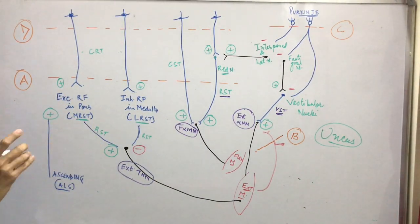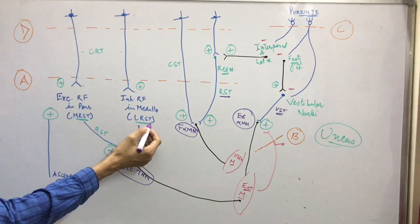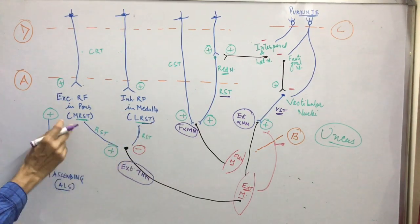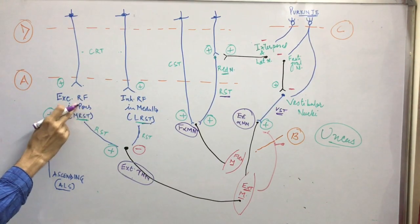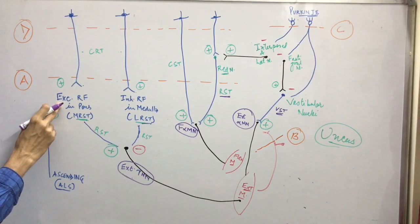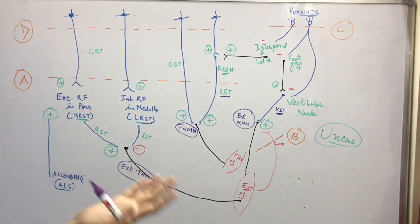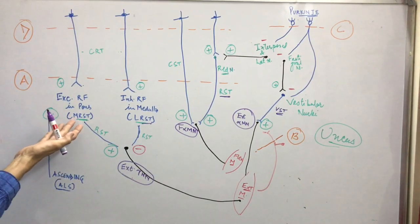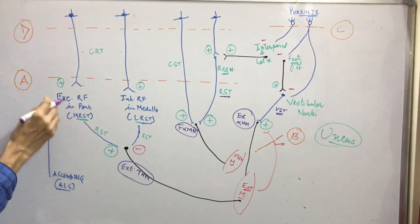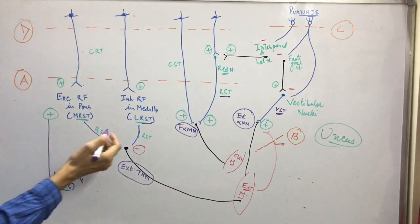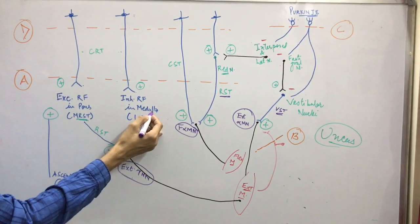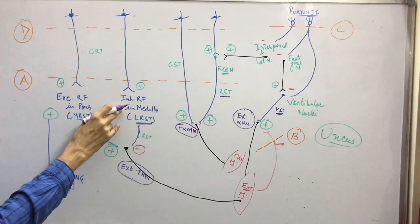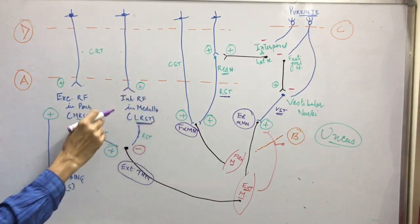In the reticulospinal tract there are two types: one is the medial reticulospinal tract, and the second one is the lateral reticulospinal tract. The medial reticulospinal tract is formed by neurons present in the pons — these are the excitatory reticular formation. They have their own rhythm and keep on stimulating. In the case of the lateral reticulospinal tract, it originates from the medial medulla, and these are the inhibitory reticular formation, but they don't have their own automaticity.